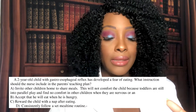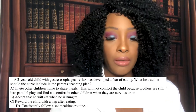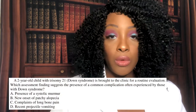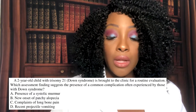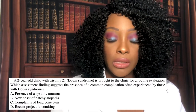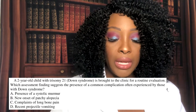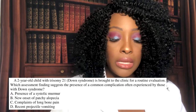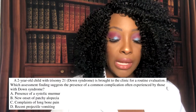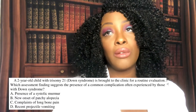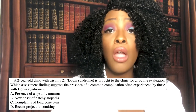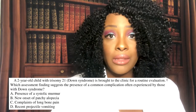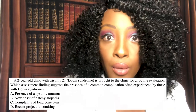Question four: A two-year-old child with trisomy 21 — that's Down syndrome — is brought to the clinic for a routine evaluation. Which assessment finding suggests a common complication often experienced by those with Down syndrome? A) Presence of a systolic murmur. B) New onset of patchy alopecia. C) Complaints of long bone pain. Or D) Recent projectile vomiting. The correct answer is A — a systolic murmur — because the most common complication of Down syndrome is congenital heart defects, and a heart murmur is not normal.